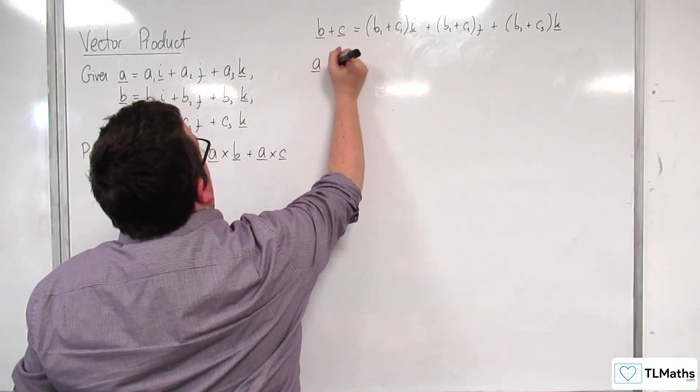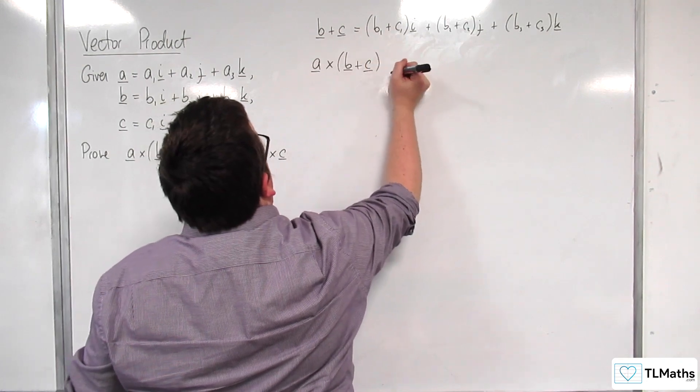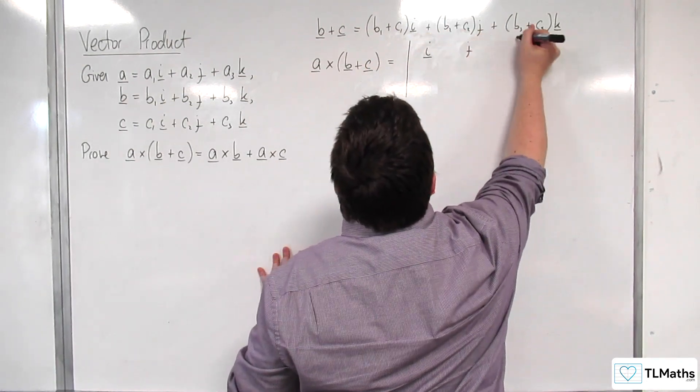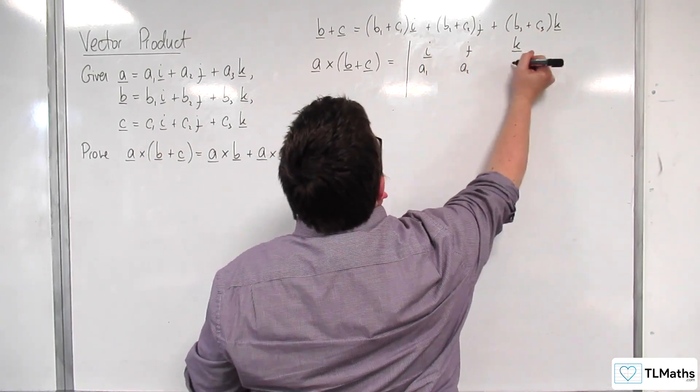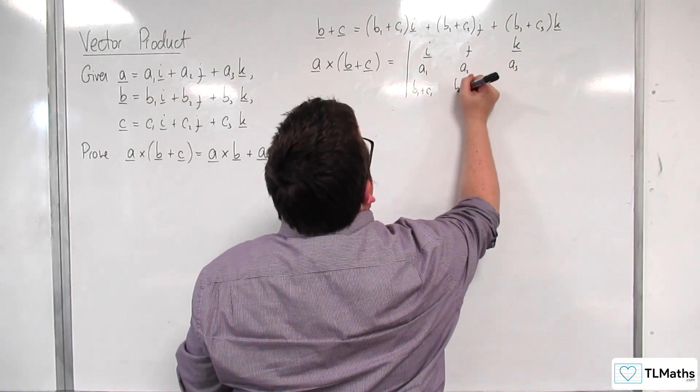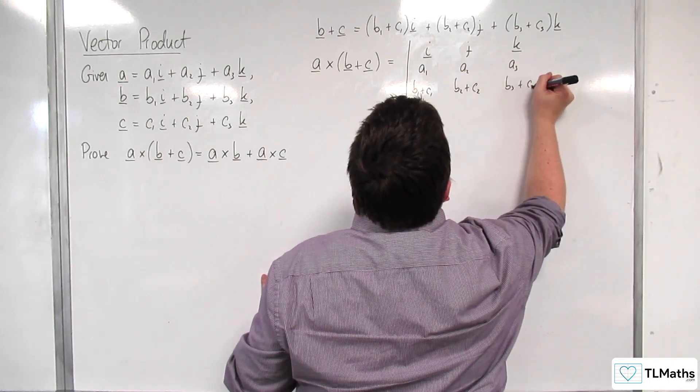So if I find a cross b plus c, then I am looking at the determinant of i j k in the top row, a1, a2, a3. And here we would have b1 plus c1, b2 plus c2, b3 plus c3.